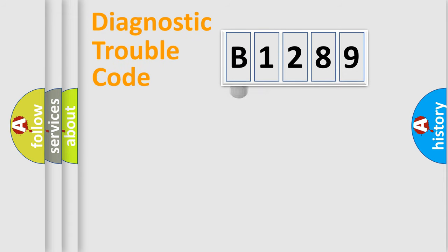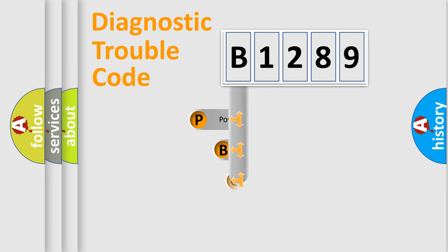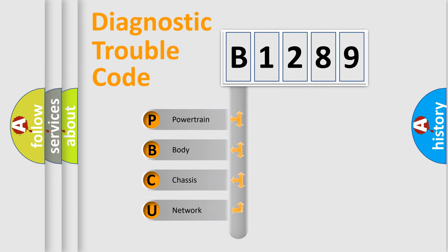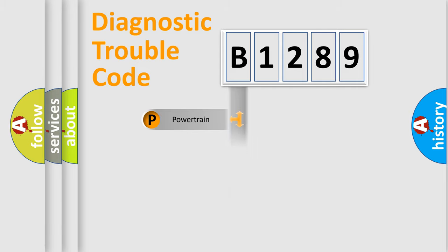Let's look at the history of diagnostic fault code composition according to the OBD2 protocol, which is unified for all automakers since 2000. We divide the electric system of an automobile into four basic units: Powertrain, Body, Chassis, and Network.